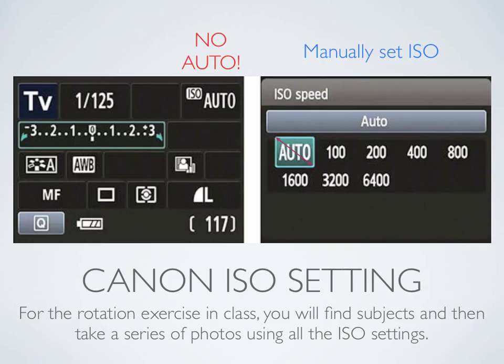For the rotation exercises you will be doing in class, you'll find subjects and then take a series of photos using all of your ISO settings. Your ISO speeds when they come up on your menu set: auto, 100, 200, 400, 800, 1600, 3200, and 6400. There's a red arrow through auto because you're going to manually set your ISO. Continuing the exercises from last week with aperture and shutter speed, this time you're going to manually set your ISO and go out during class. Hopefully you can get out a little earlier to get some daylight. Find subjects and take a series of photos using all of your ISO settings from 100 to 6400.